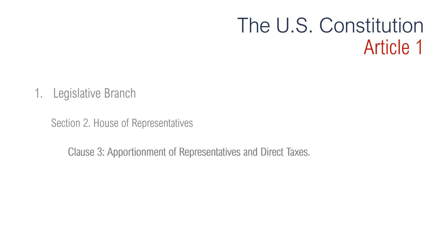Section 2, Clause 3 is regarding the apportionment of representatives and direct taxes. It basically says that a state's representation in the House is based on the size of the state's population. Population is counted in each decade's census for each state, after which Congress reapportions House seats. Since early in the 20th century, the number of seats has been limited to 435 members — and that's what it is today.